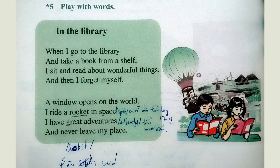Exercise 5: Play with words. In the library. When I go to the library and take a book from a shelf, I sit and read about wonderful things, and then I forget myself. A window opens on the world. I ride a rocket in space. I have great adventures and never leave my place.